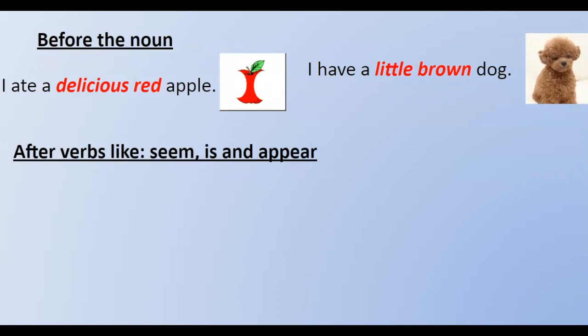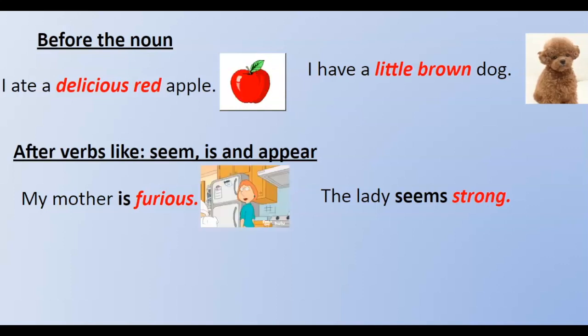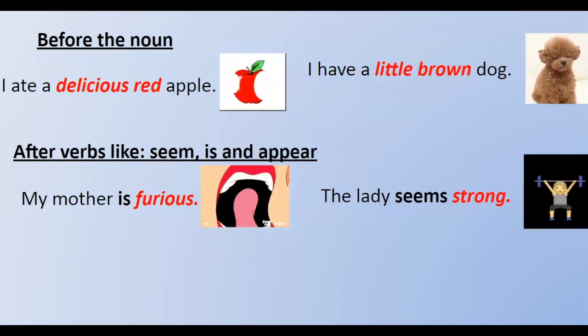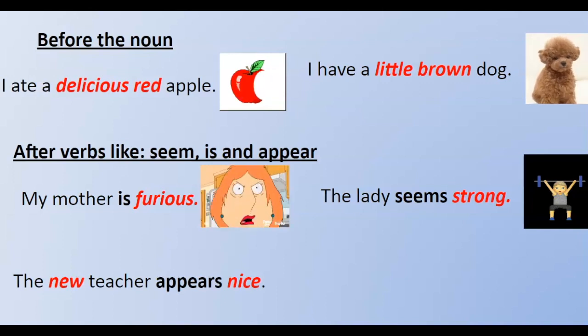After the verb, like seem, is and appear: my mother is furious. Or, the lady seems strong. The new teacher appears nice.